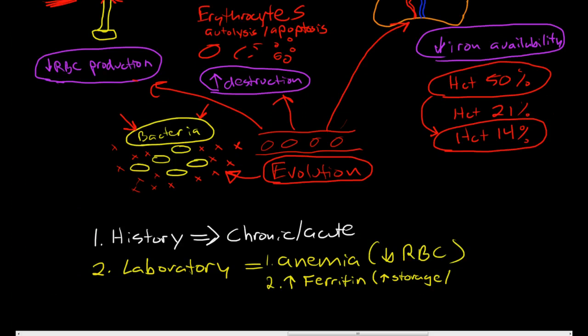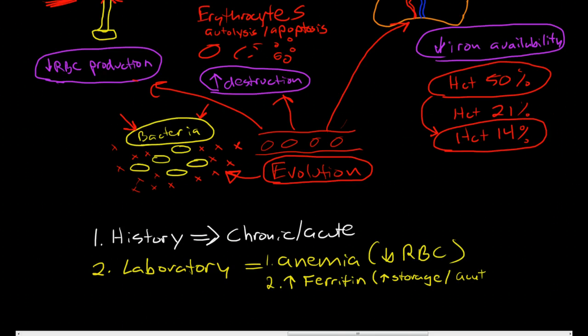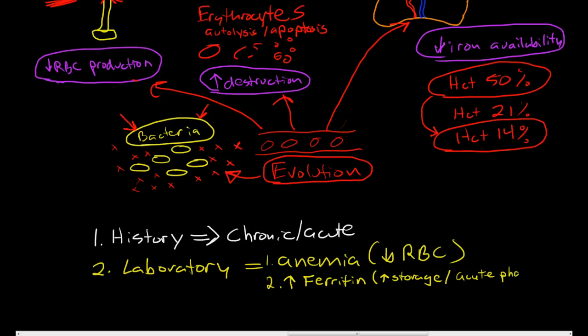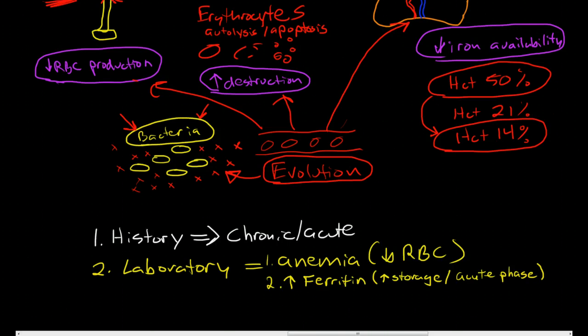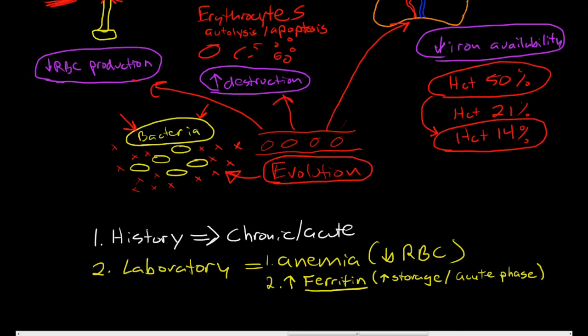ferritin is what's known as one of the acute phase reactants. So when you have acute inflammation, ferritin along with C-reactive protein and some of the other acute phase reactants are going to be elevated in the blood. So you're actually going to have an elevated ferritin, or normal.